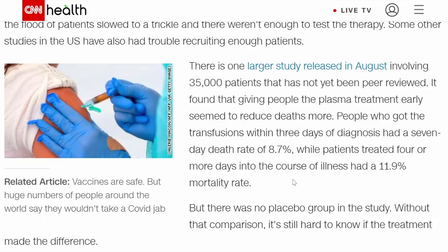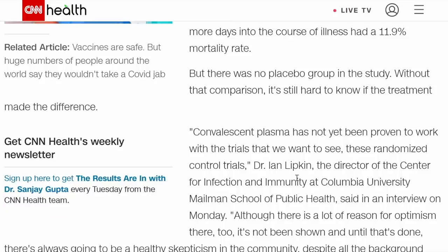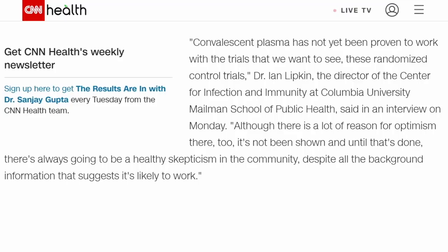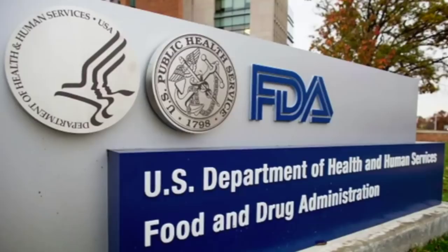They referenced the article we just spoke about, where there is one larger study released in August involving 35,000 patients that has not yet been peer-reviewed. It found that giving people plasma treatment early seemed to reduce deaths more. People who got transfusions within three days of diagnosis had a seven-day death rate of 8.7%, while patients treated four or more days into illness had an 11.9% mortality rate. But there was no placebo group in the study. The article ends: Convalescent plasma has not yet been proven to work with the trials we want to see, these randomized controlled trials. Although there is a lot of reason for optimism, it has not been shown, and until it's done, there's always going to be healthy skepticism despite background information suggesting it's likely to work.